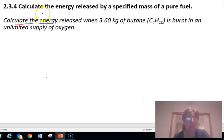The question is calculate the amount of energy, that's your X. So generally energy is in kilojoules. And any other information that you're given: you're given the mass of butane and it's 3.6 kilograms.